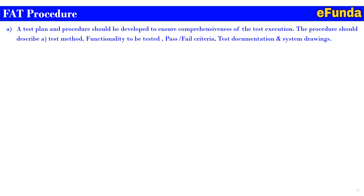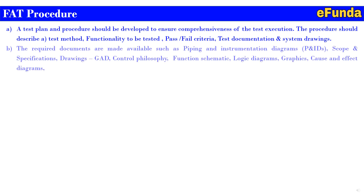A test plan and procedure should be developed to ensure comprehensiveness of the test execution. The procedure should describe the test method, functionality to be tested, pass-fail criteria, test documentation and system drawings. The required documents made available include piping and instrumentation diagram (P&ID), scope and specification drawings (mainly GADs), control philosophy, functional schematics, logic diagrams, graphics, cause and effect diagrams, as well as inspection and test plan, checklist and procedure specific to the FAT, and calibrations and certifications required by the contract.